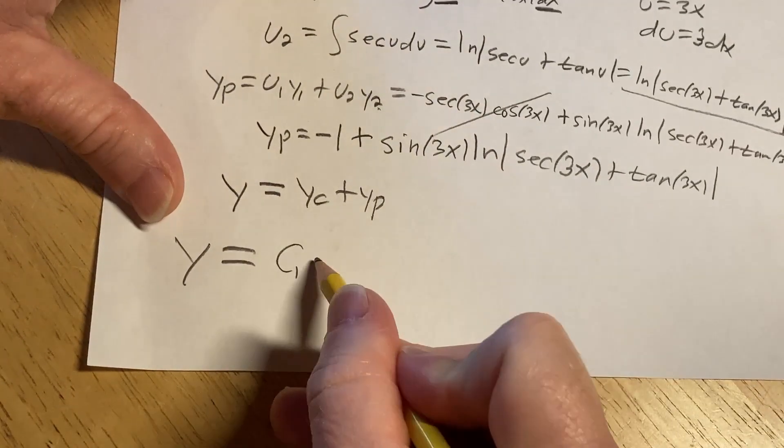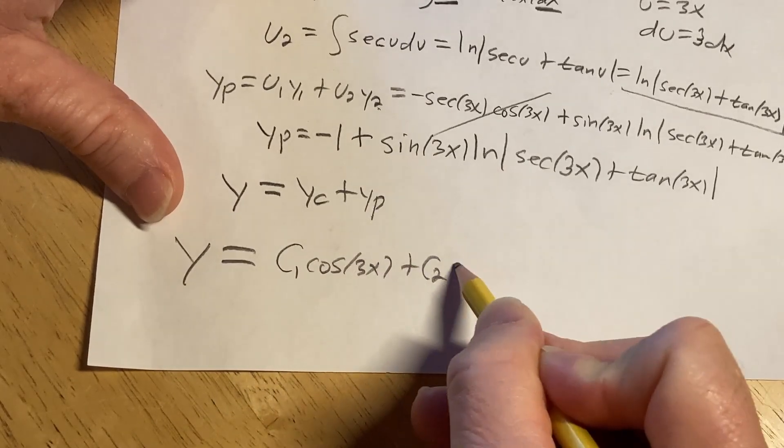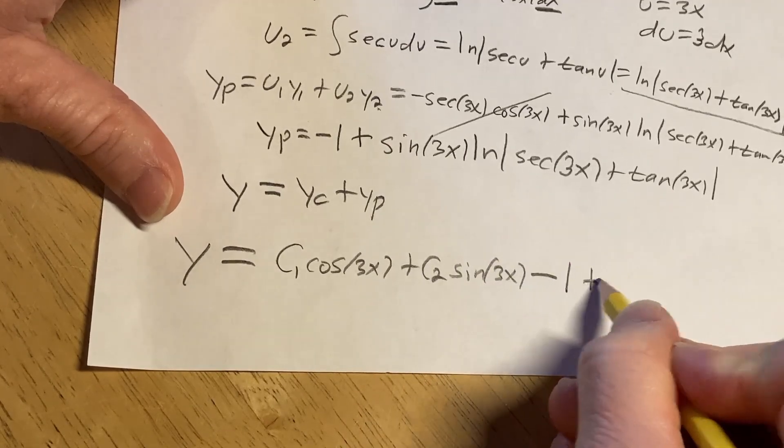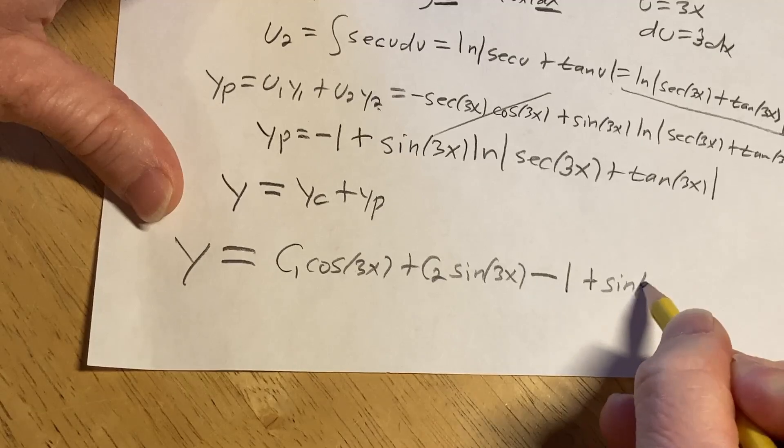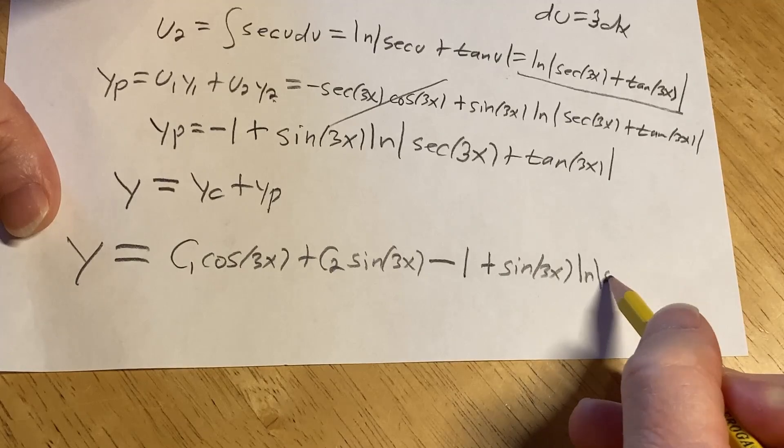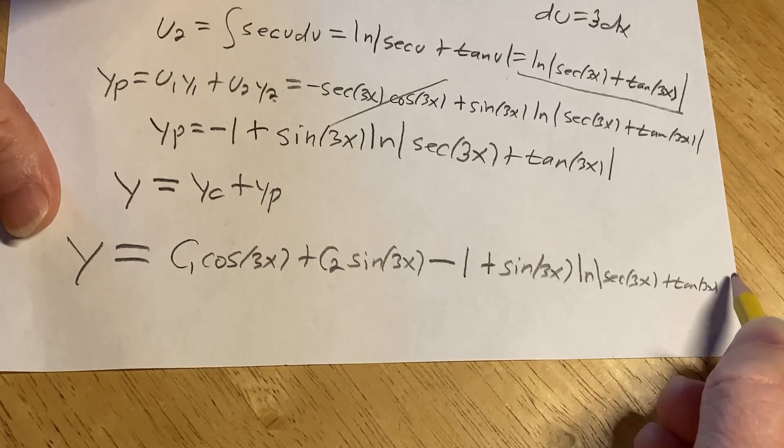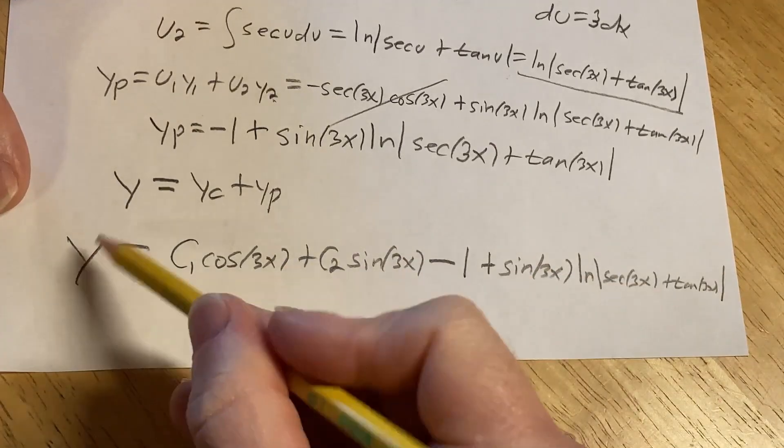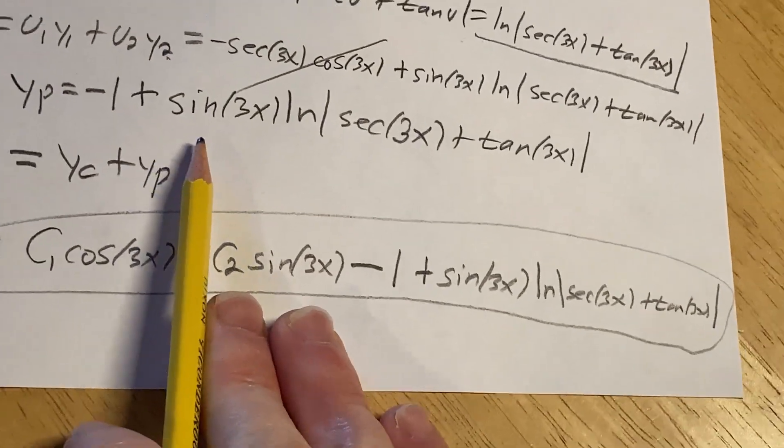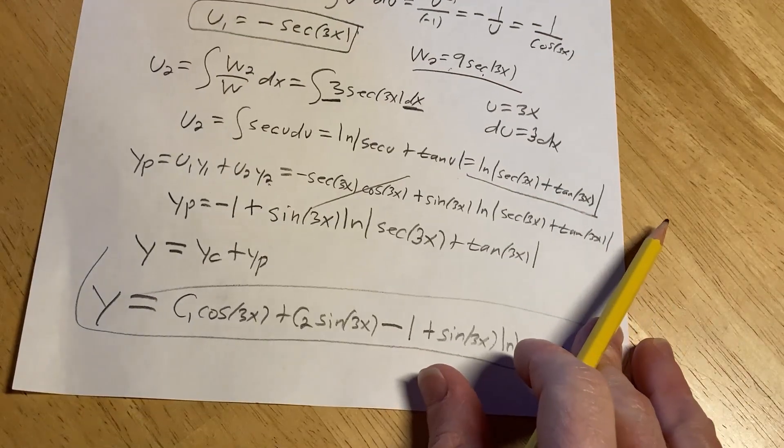So y equals, finally, c1 cosine 3x, plus c sub 2 sine 3x, minus 1, plus the sine of 3x. Natural log absolute value secant 3x plus tangent 3x. I got too excited and wrote too big. Well, that's the answer. I squeeze it in. There it is. Let me zoom in so you can see it. There's the final answer. So messy mathematics. I just wanted to show you a messy problem from differential equations.